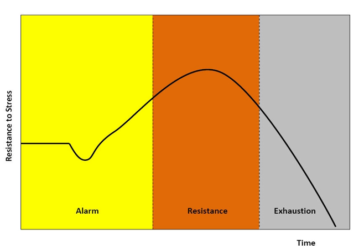Physiological stress represents a wide range of physical responses that occur as a direct effect of a stressor causing an upset in the homeostasis of the body. Upon immediate disruption of either psychological or physical equilibrium, the body responds by stimulating the nervous, endocrine, and immune systems. The reaction of these systems causes a number of physical changes that have both short and long-term effects on the body. The Holmes and Rahe stress scale was developed as a method of assessing the risk of disease from life changes. The scale lists both positive and negative changes that elicit stress.